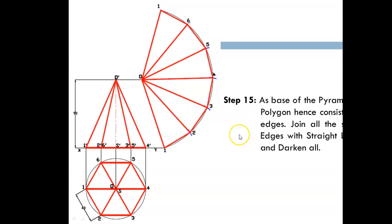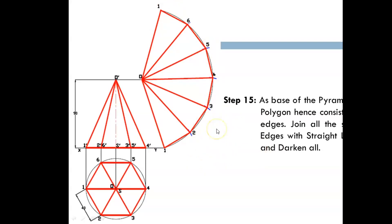Since a pyramid always has a polygonal base with straight edges, in the development you also join all the base points with straight lines. Join all the points with straight lines and darken them. The lateral development of the hexagonal pyramid is now complete. Thank you, thanks a lot.